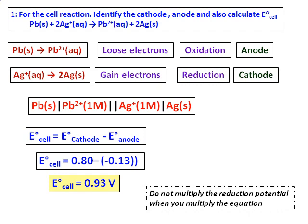Again, a key warning: even though you must balance the electrons by multiplying the half-reactions, do not multiply the reduction potential values when you multiply the equations. The E° values remain unchanged.